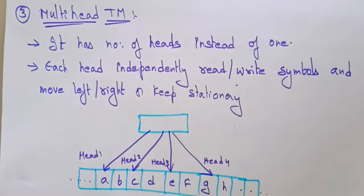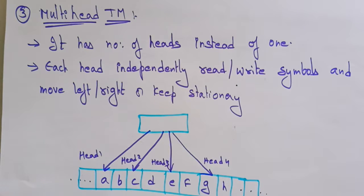Hi students, welcome back. We are discussing the different variations of the Turing machine. So far we have seen the multi-tape Turing machine and non-deterministic Turing machine. In the multi-tape Turing machine you are using multiple tapes, whereas in the non-deterministic Turing machine you can select any one of a number of different choices.